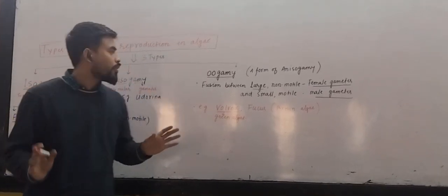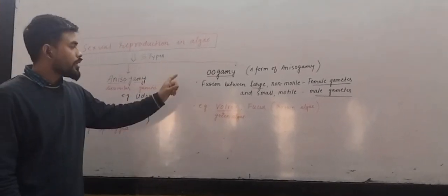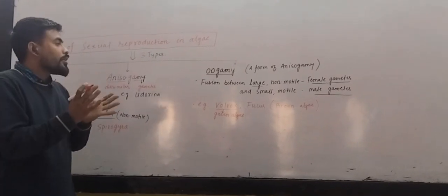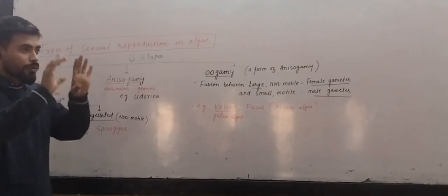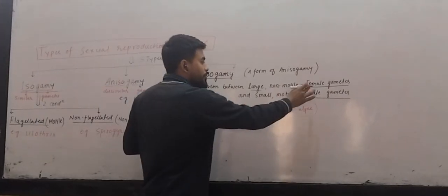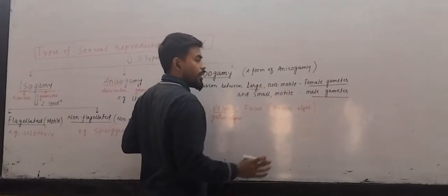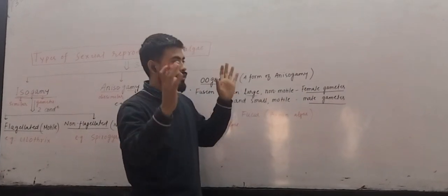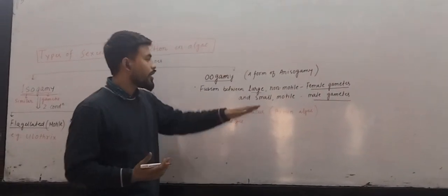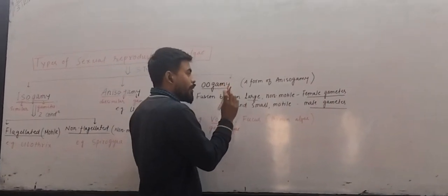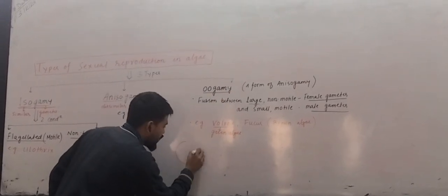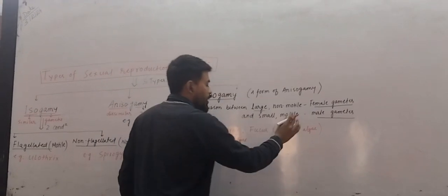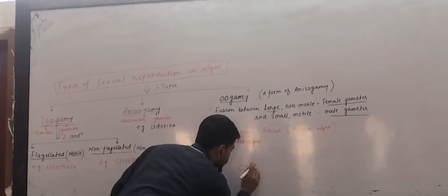Remember, oogamy is the most advanced form of sexual reproduction. In oogamy, there is fusion of morphologically dissimilar gametes — why morphologically dissimilar? Because the female gamete is large. For example, in human beings, the egg (ovum) is large in size, while the sperm is small in size.